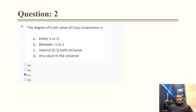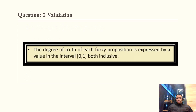Question 2: The degree of truth value of a fuzzy proposition is always in the interval 0 to 1, both inclusive. This is a straightforward question. Cross-validation confirms: the degree of truth of each proposition is expressed by a value in the interval [0, 1], both inclusive.